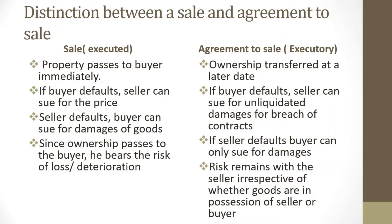The critical distinction is between a sale and an agreement to sell. Under a sale, property in the good passes immediately — when you buy a phone and pay for it, you are the owner immediately and the risk has also passed to you. Under an agreement to sell, ownership passes at a later date. Property and ownership will be used interchangeably as they are legal terms.